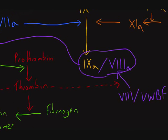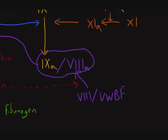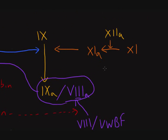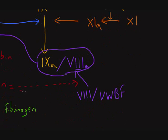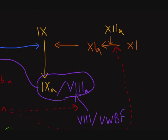Thrombin has more positive feedback action still. Going right back to the start of our intrinsic pathway, we can see factor 11 being converted to activated factor 11 — thrombin also augments that process. It has a positive impact on speeding this up, so through this we're producing more factor 9, again feeding back positively into the rest of the process.